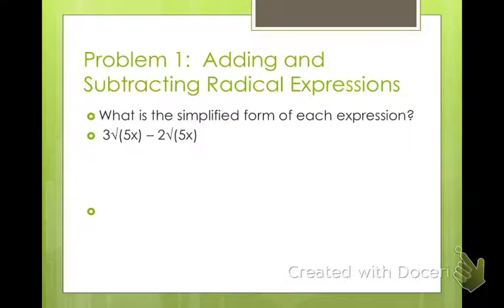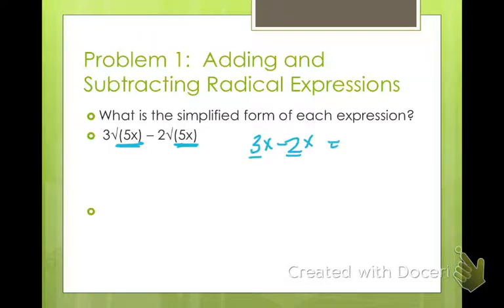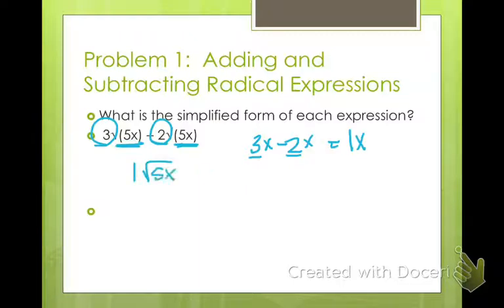What is a simplified form of each expression? 3 square root of 5x minus 2 square root of 5x. In order to add and subtract these, the indexes and the radicands must be the same. Just like 3x minus 2x gives us x, we take 3 square root of 5x minus 2 square root of 5x and get 1 square root of 5x, or just square root of 5x.